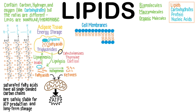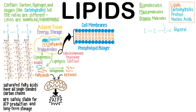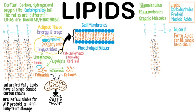Biological membranes are made from a phospholipid bilayer. Like the energy storage form of triglycerides, phospholipids have a glycerol head, but they only have two fatty acid tails. Fatty acid chains can be single-bond chains, or they can have double bonds, like this one.